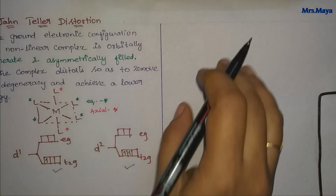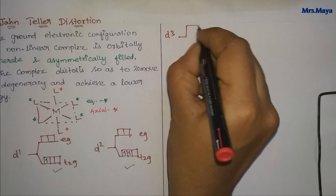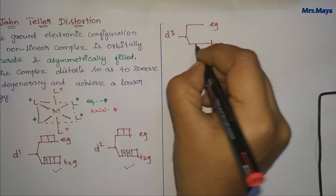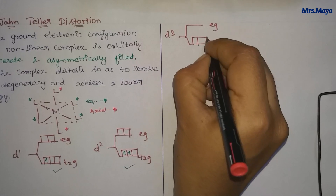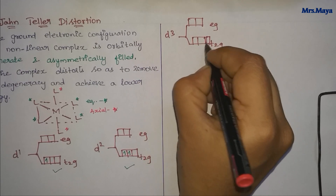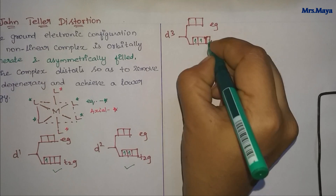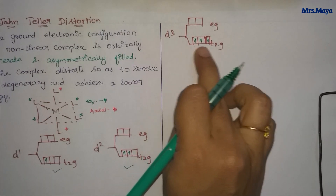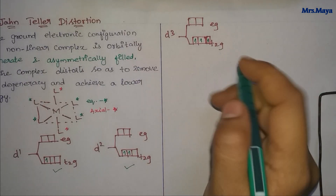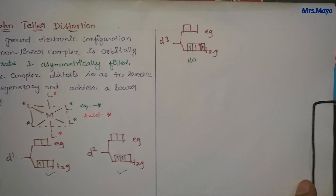We can see the D3 system. We have a split — this is T2G and EG. There are three electrons. How do you fill them? There are three available degenerate orbitals. There is symmetric electron filling, which means there is no distortion.